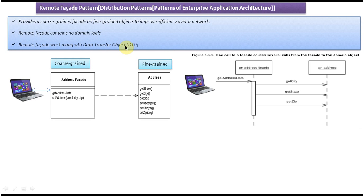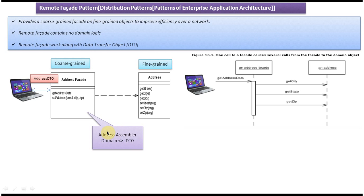Here you can see how we can use DTO in the remote packet. When the client makes a call to the address packet, the address packet will use an address assembler or mapper. This mapper will read the address domain information and formulate an address DTO, which will then be sent back to the client. That is how the remote packet can work with a Data Transfer Object. Thanks for watching, bye.